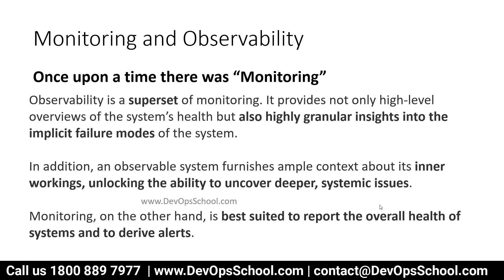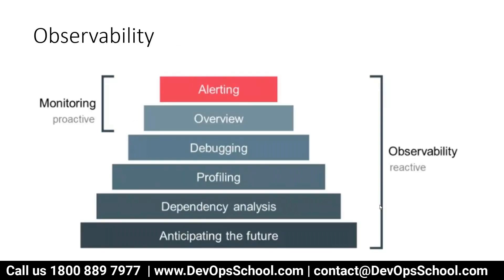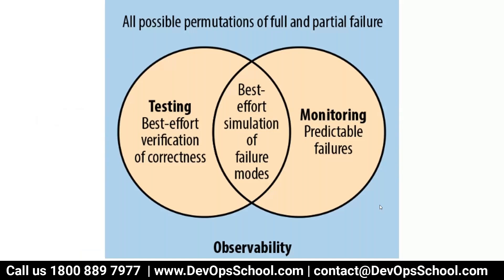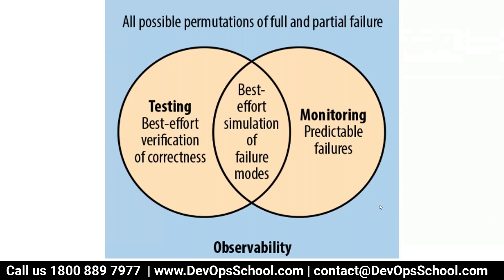If you look at the pyramid here, as part of monitoring we were doing alerting, overview, and debugging. But with observability we do more than that — profiling, what kind of issues you have, dependency analysis based on the data we have. We predict the future also. Whatever the best methods we use in testing and verification processes, we put that into observability along with monitoring and predictable failures, and the domain that has emerged is observability.